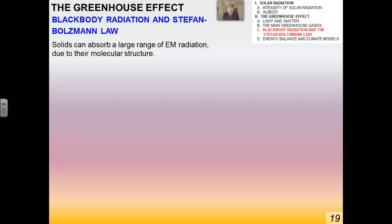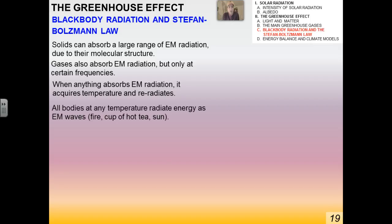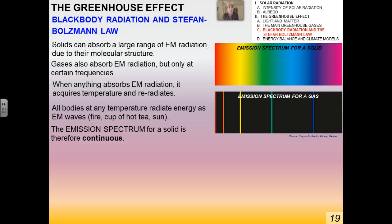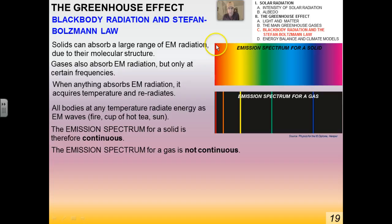Remember that solids can absorb a large range of electromagnetic radiation due to their molecular structure. Gases can also absorb EM radiation but only at certain frequencies. When anything absorbs electromagnetic radiation it acquires temperature and then re-radiates in the infrared part of the spectrum. So all bodies at any temperature radiate energy as electromagnetic waves. The emission spectrum for a solid is therefore continuous — there are no black lines. The emission spectrum for a gas is not continuous, and the fact that the emission spectrum for a solid is continuous is actually very important for us.